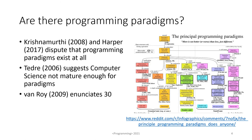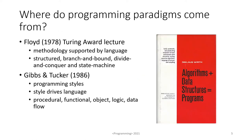So are there actually programming paradigms? Well, Krishnamurthy and Harper both dispute there are programming paradigms at all. Tedray suggests that computer science isn't mature enough for there to be paradigms, but on the other hand Van Roy suggests that there are 30 paradigms. So where do programming paradigms come from? I reckon they start with Floyd's 1978 Turing award lecture.